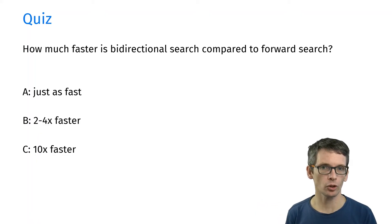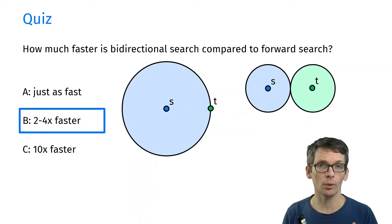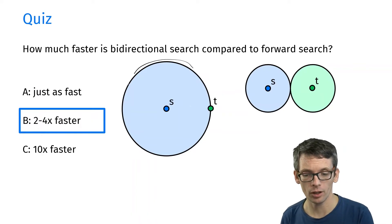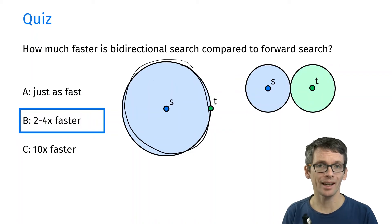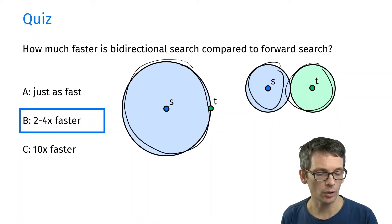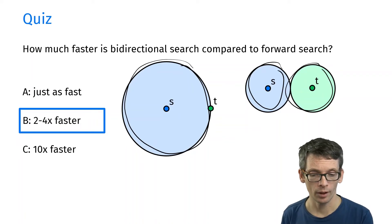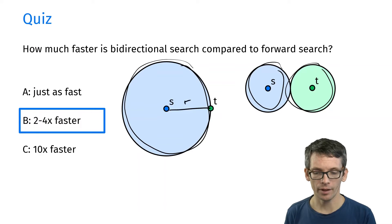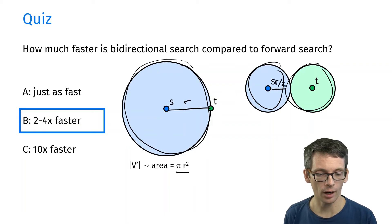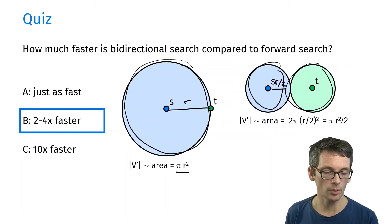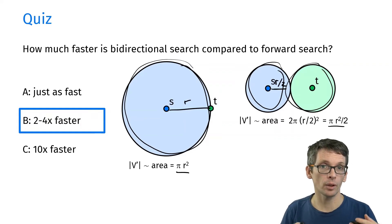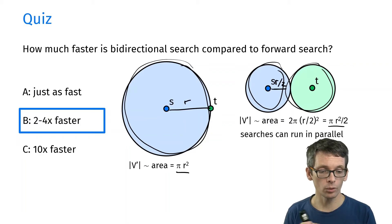We're expecting the bidirectional search to be 2 to 4 times faster. Why is that the case? We can look at this from the geometric perspective. If I do the forward search then I'm exploring this blue circle here and in the bidirectional search those two circles. Let's compare the areas of those two. If the distance is r then the area of this one is π r². Here the radii are r/2 so there I get 2 times π(r/2)² and that's π r² divided by 2. So that would be twice as fast and then we could also use parallelization. So roughly 2 to 4 times faster.